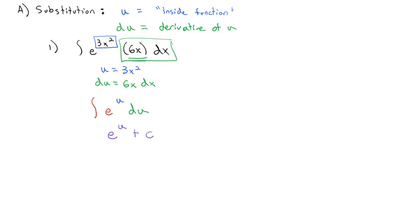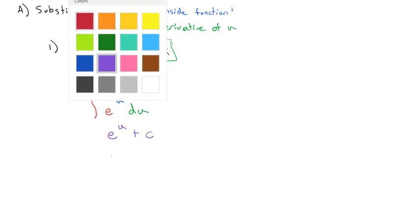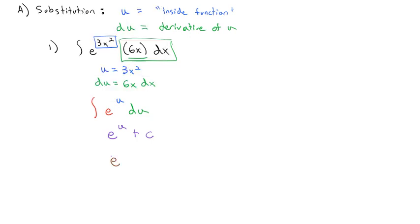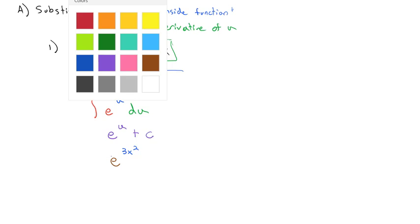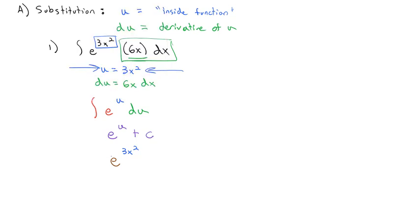The antiderivative of e to the u is just e to the u plus our constant. But the original problem didn't have u's, so we'll convert back and change that to e to the 3x squared plus our constant. And that becomes our final solution.